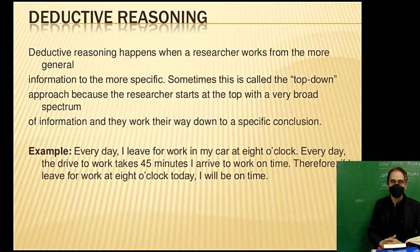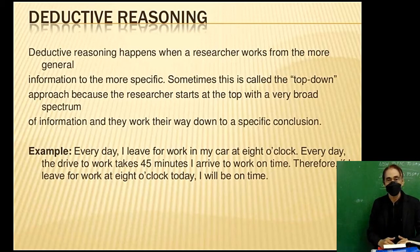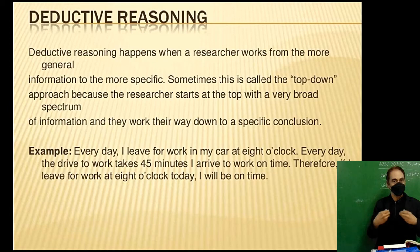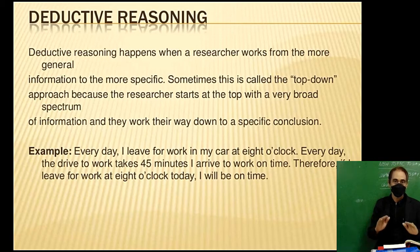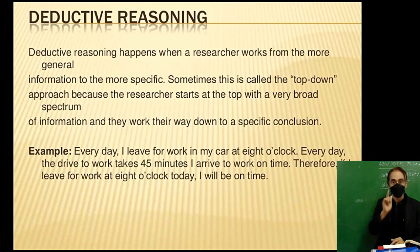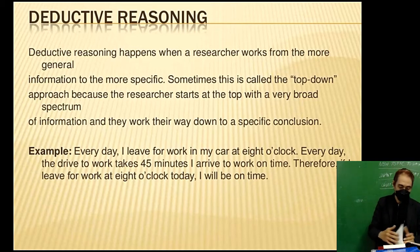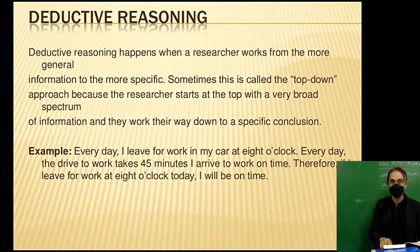Deductive reasoning happens when a researcher works from more general information to the more specific. Sometimes this is called the top-down approach, because the researcher starts at the top with a very broad spectrum of information and works their way down to a specific conclusion. Example: Every day I leave for work in my car at eight o'clock. Every day the drive to work takes 45 minutes. I arrive to work on time. Therefore, if I leave for work at eight o'clock today, I will be on time.